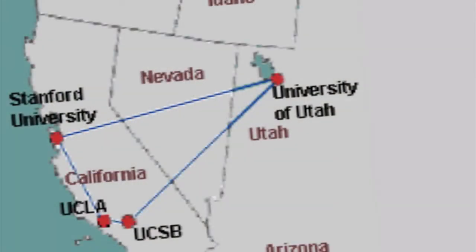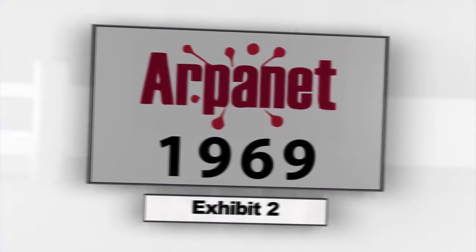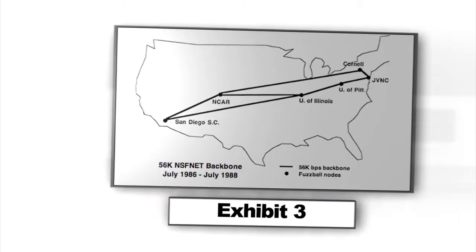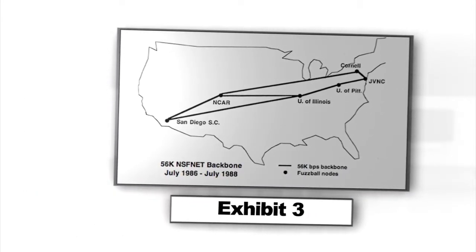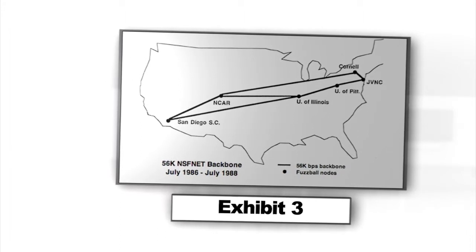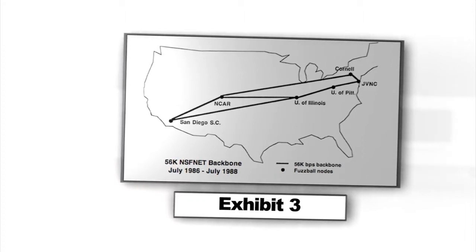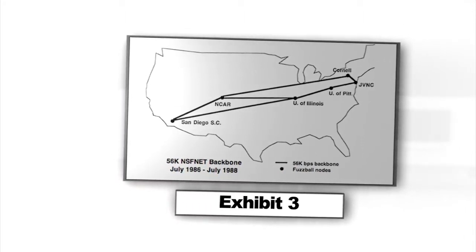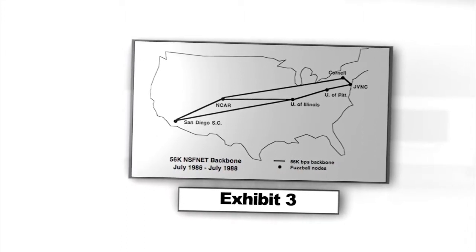The early Internet was used by computer experts, engineers, scientists, and librarians. There was nothing friendly about it. In 1986, the National Science Foundation funded NSFNET as a cross-country 56-kilobyte backbone for the Internet. They maintained their sponsorship for nearly a decade, setting rules for its non-commercial government and research uses.